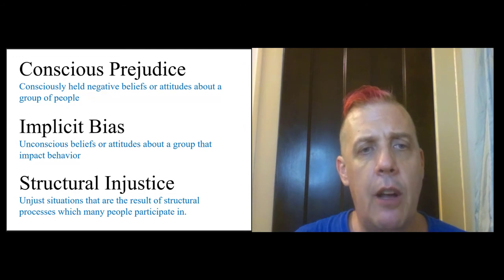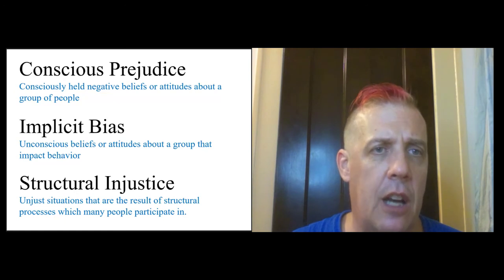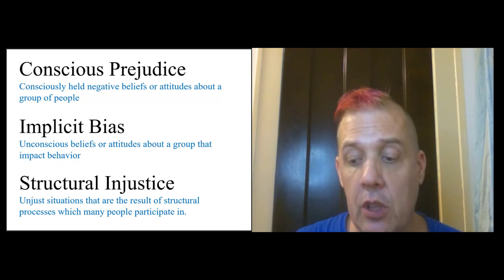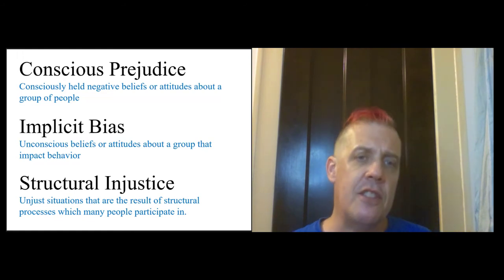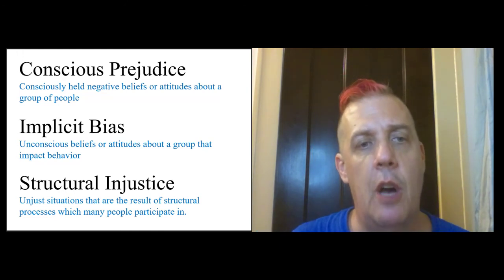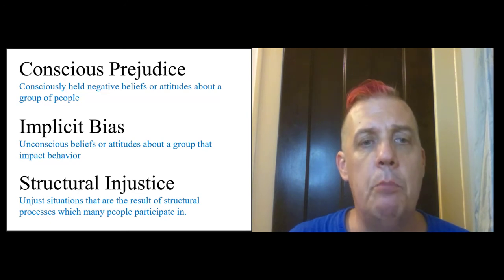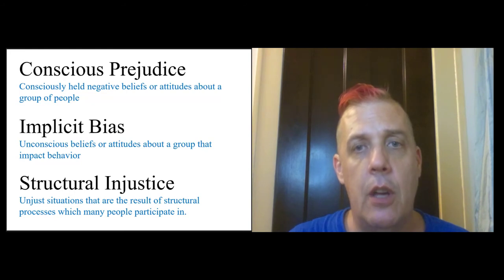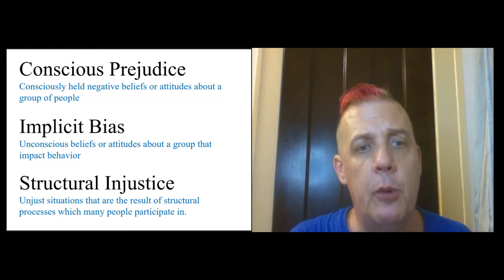We're also fairly used to the idea of implicit bias, because this has gotten a lot of coverage, and many workplaces will have implicit bias training. This is about a different kind of prejudice — unconscious beliefs or attitudes about a group that impact your behavior. For example, you might say you're not biased against black people, but if you find yourself clutching your purse tighter as a black man walks by, you might actually be under the influence of implicit bias.